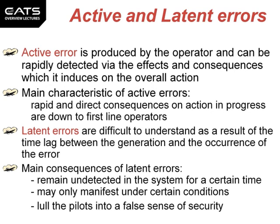Active and latent errors. Active error is produced by the operator and can be rapidly detected via the effects and consequences which it induces on the overall action. The main characteristics of active errors are rapid and direct consequences on action in progress, down to first-line operators. Latent errors are difficult to understand as a result of the time lag between the generation and the occurrence of the error.